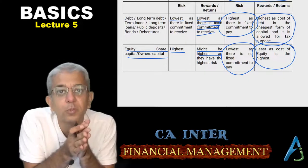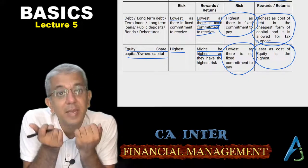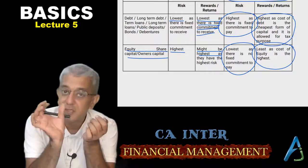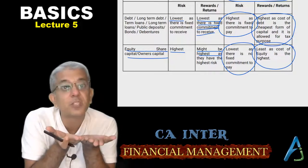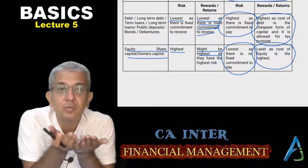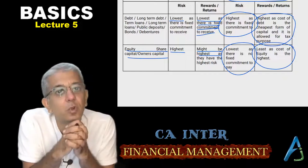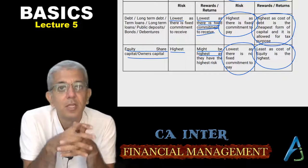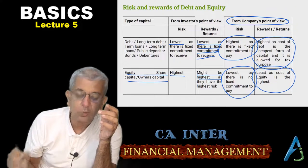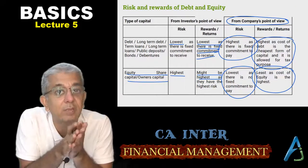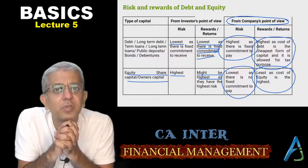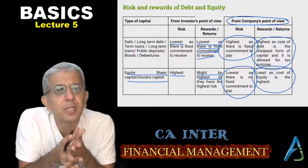One more point: returns will be less because if you're issuing equity shares, the earnings will get spread over a greater number of equity shares, so ultimately per-share earnings will always be less. This is the basic risk and return chart for debt and equity, which will be useful for all the chapters we are going to cover further. Thank you, I will see you next time.